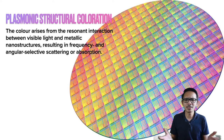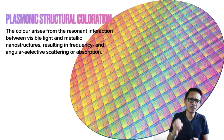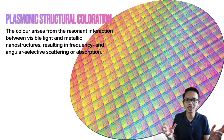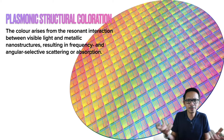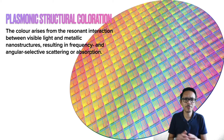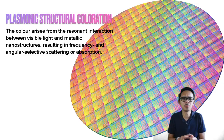What is plasmonic structure coloration? It is the structural colors that arise from the resonant interaction between visible light and metallic nanostructures. As a result, part of the light is scattered and part of the light is absorbed. The colors produced from the nanostructure are highly dependent on the configurations as well as the material used.